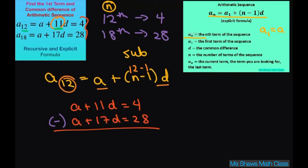Now we're going to eliminate the a. So a minus a is 0, that goes away. 11d minus 17d is negative 6d. 4 minus 28 is negative 24. Divide both sides by 6, you get d equals 4. So we found our common difference.